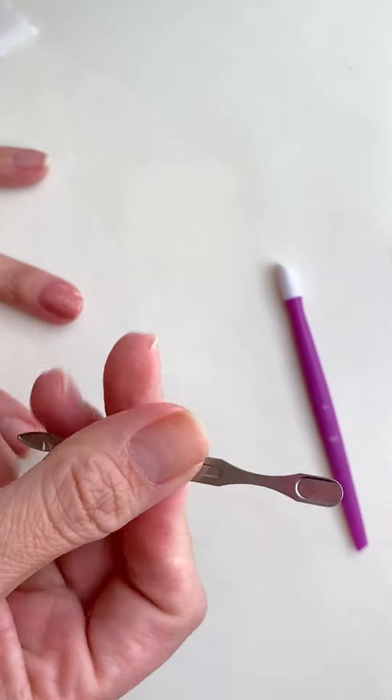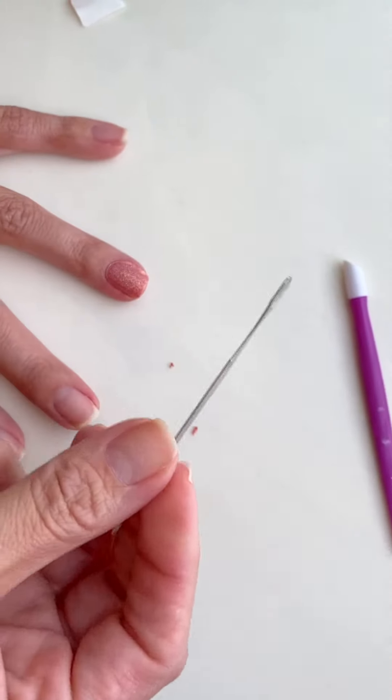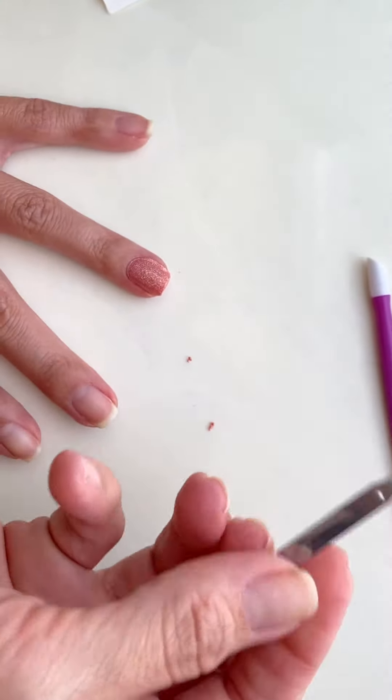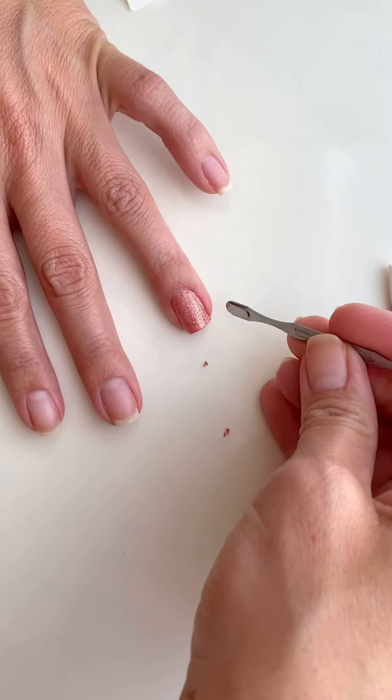Or this is another little tool that I like. It came in my mani kit. It was a little tiny kit and it was like three bucks and it came in there. So any kind of just straight edge, you can also use as well as your thumb.